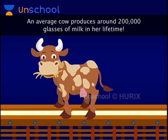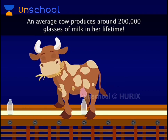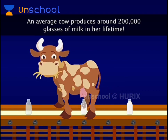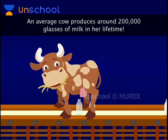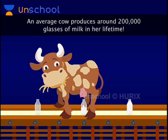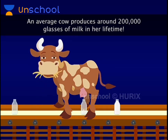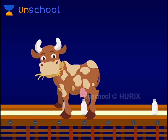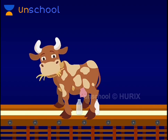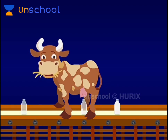An average cow produces around 200,000 glasses of milk in her life.